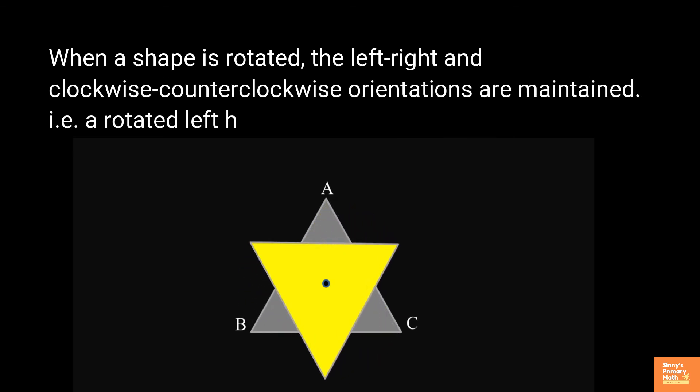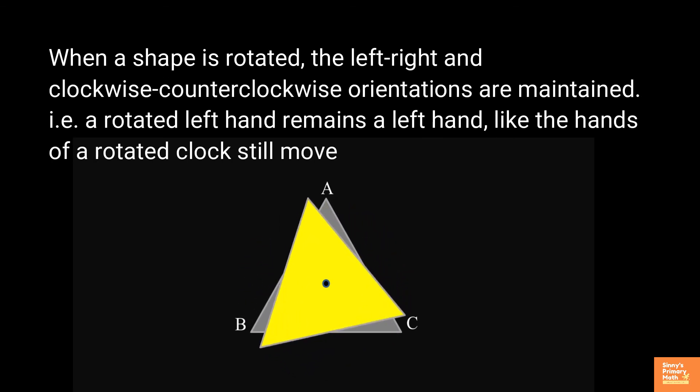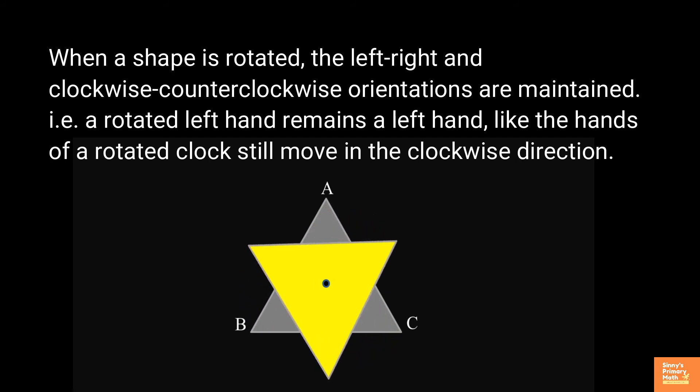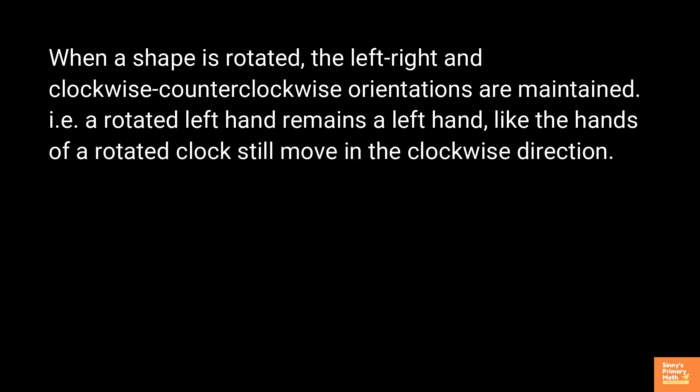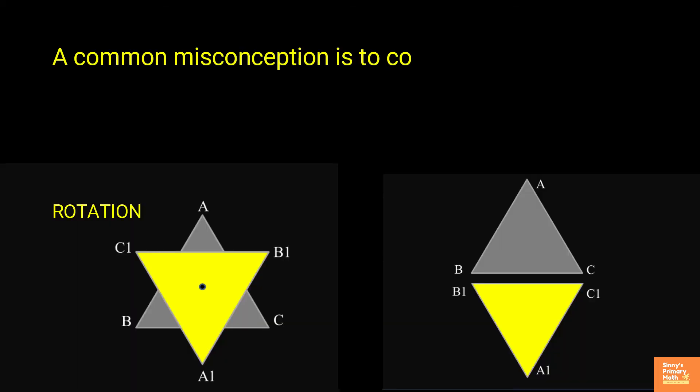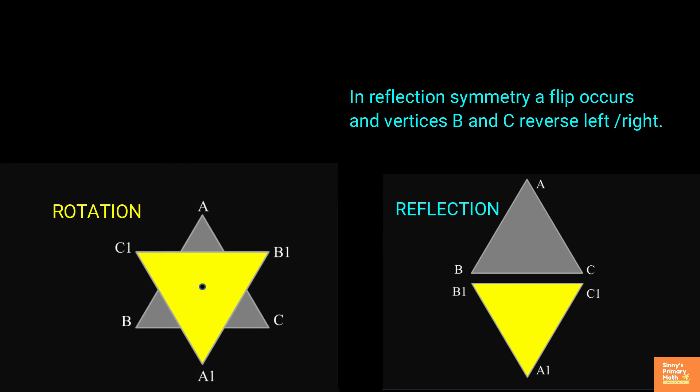When a shape is rotated, the left, right and clockwise, counterclockwise orientations are maintained. That is, a rotated left hand remains a left hand. Like, the hands of a rotated clock still moves in the clockwise direction. A common misconception is to confuse a 180 degree rotation with a reflection but we can see that they are very different. In reflection symmetry, a flip occurs on vertices B and C, reverse left, right.